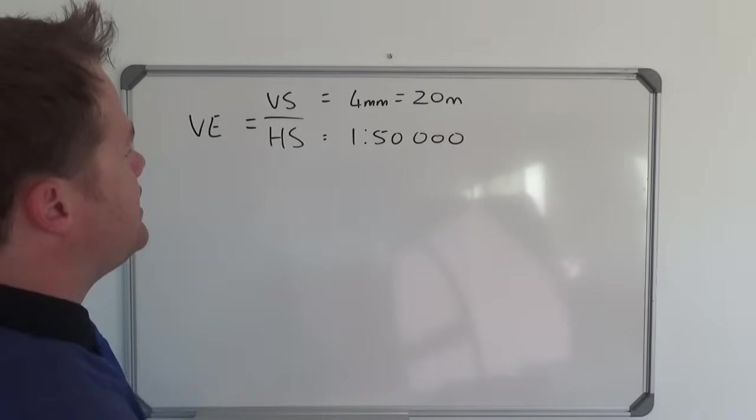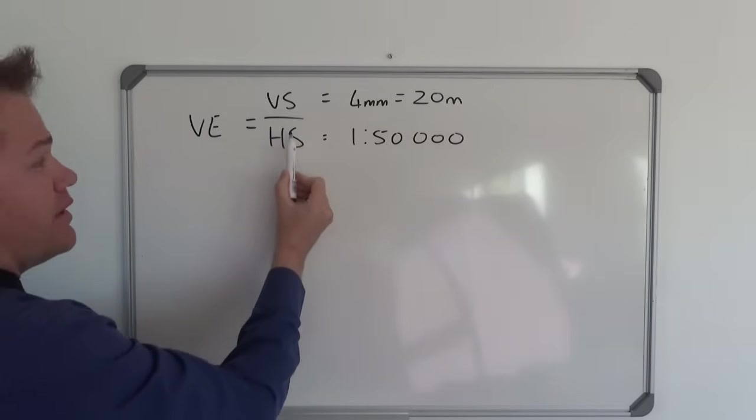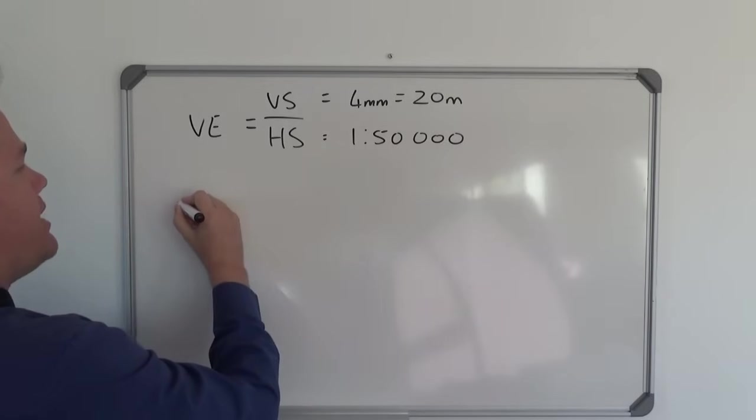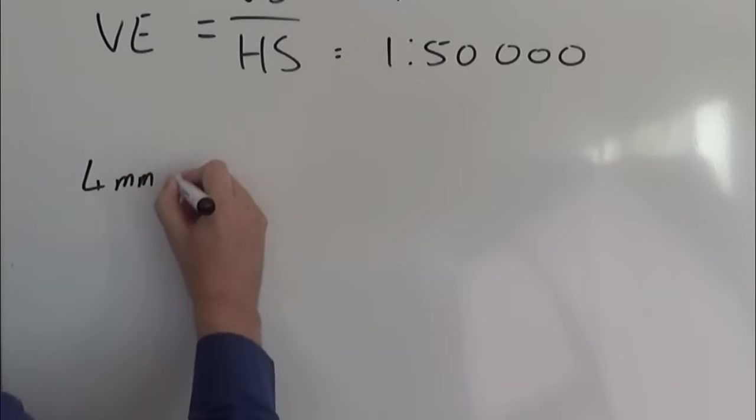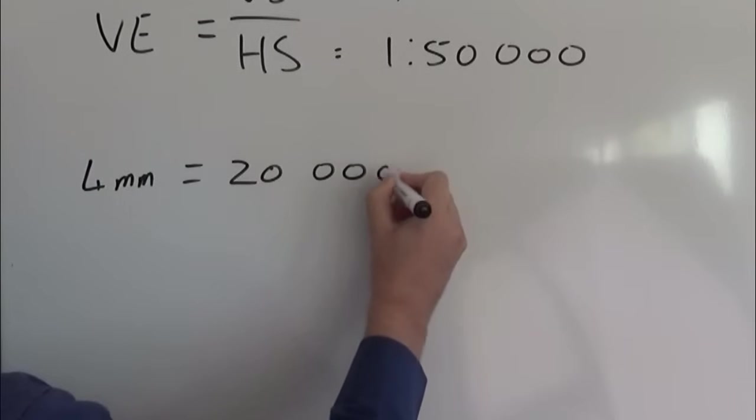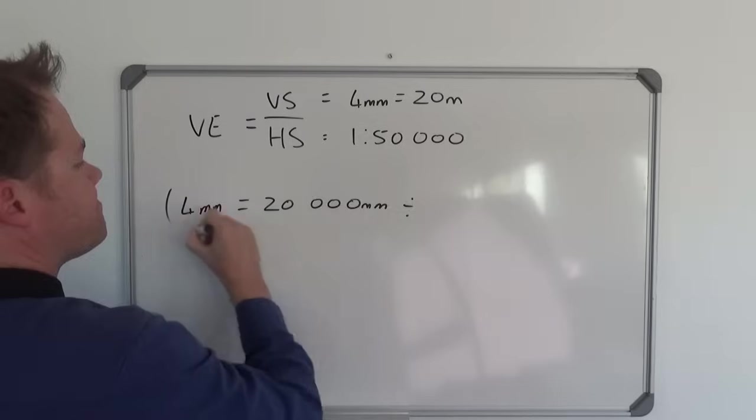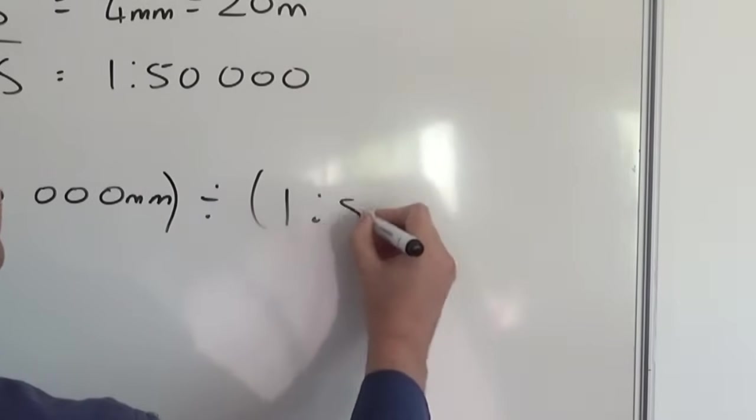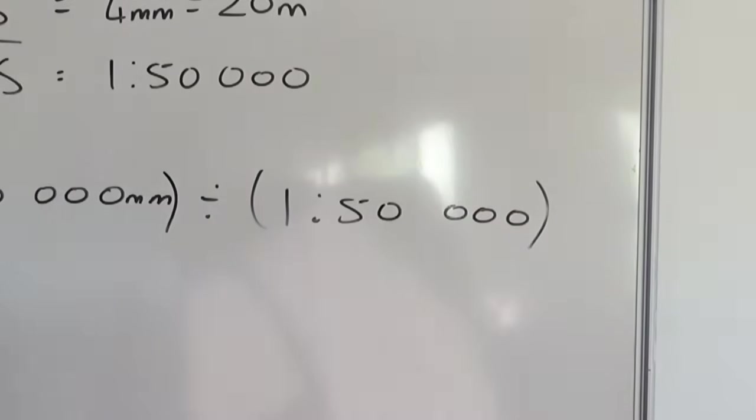But I'm going to write this slightly differently because we are doing a division calculation here. And so what we'll do is the following. We will say 4 millimeters equals 20,000 millimeters divided by 1 to 50,000. So we are working in millimeters here.